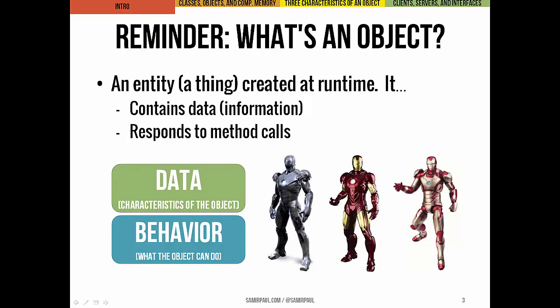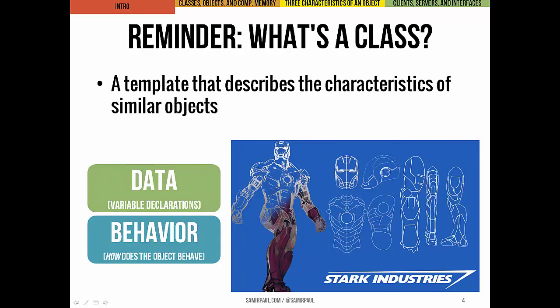It would be helpful to remind ourselves what an object actually is: it's a runtime entity that has data and can respond to messages or method calls. We think of that as data, or the characteristics of an object — the attributes — and behavior, the things an object can do. Each particular instance of the Iron Man suit is an object. A class is a software package or template that describes the characteristics of similar objects — like the blueprint for an Iron Man suit — in which we specify what data and behaviors, what instance variables and methods, a particular type of object will have.